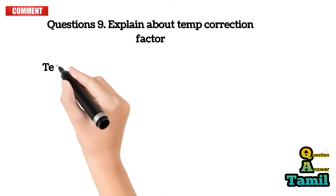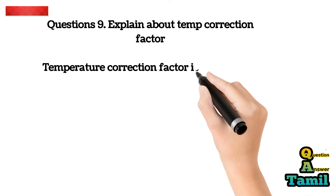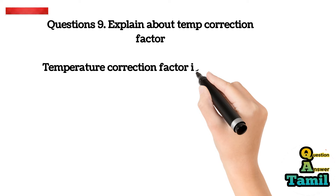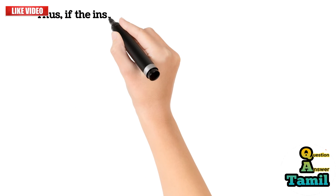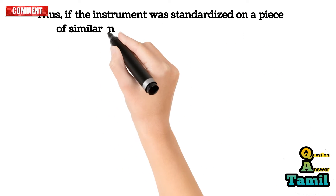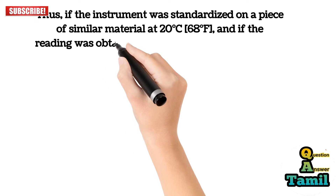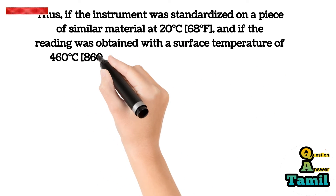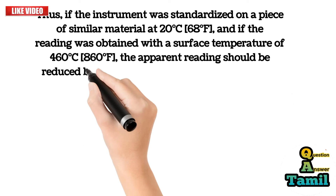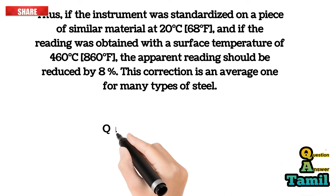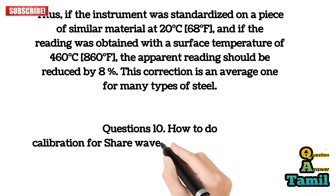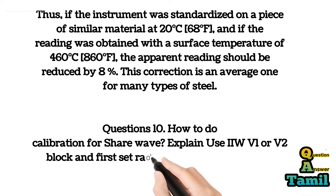Question 9: Explain about temperature correction factor. Temperature correction factor is used during ultrasonic thickness measurement. A rule of thumb often used is: the apparent thickness reading obtained from steel walls having elevated temperatures is read as too thick by a factor of about 1% per 55°C (100°F). Thus, if the instrument was standardized at 20°C (68°F) and the reading was obtained at a surface temperature of 460°C (860°F), the apparent reading should be reduced by 8%. This correction is an average for many types of steel.